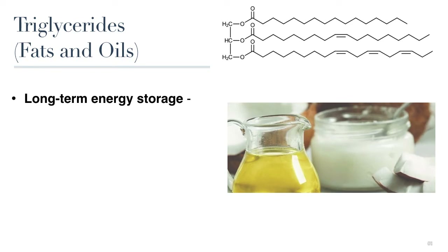In the carbohydrates lesson, we learned that glycogen can store glucose for energy in our liver and muscle cells so that we have it when our blood sugar levels drop and we need more energy. But these stores of glucose energy only last for a few hours or a day at most.